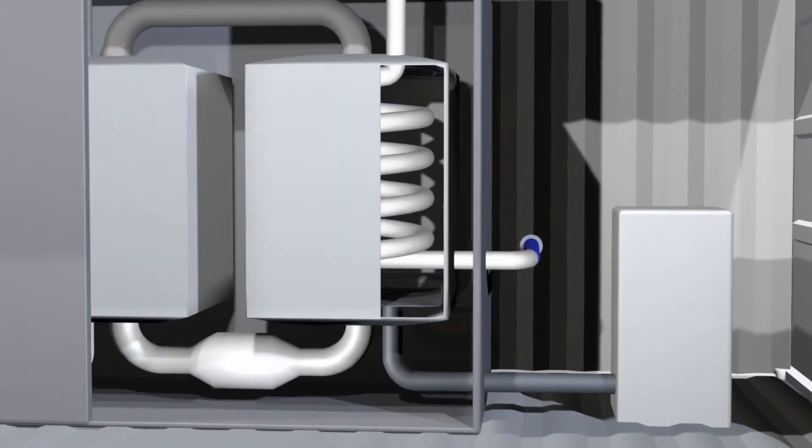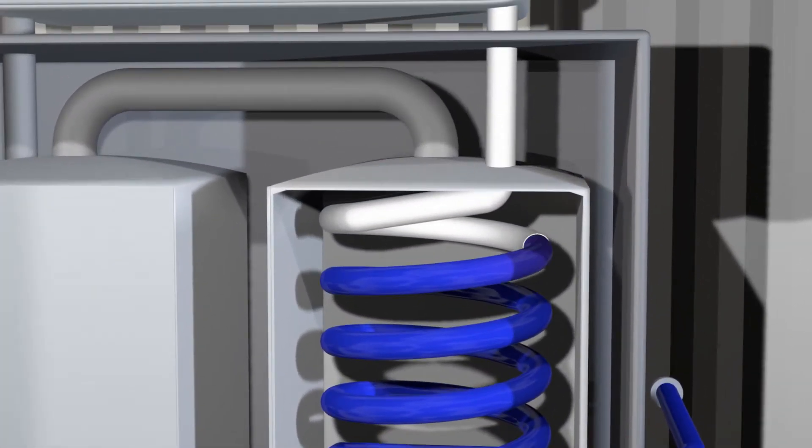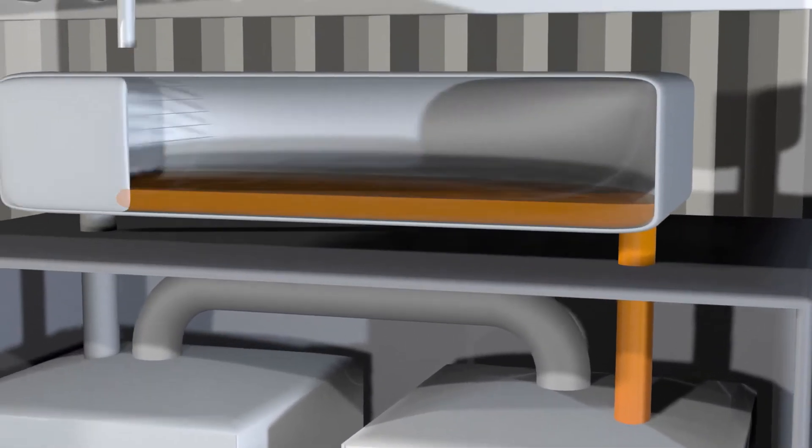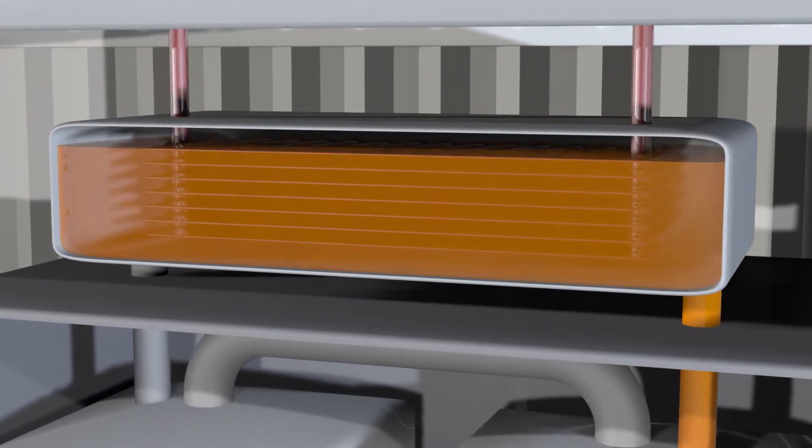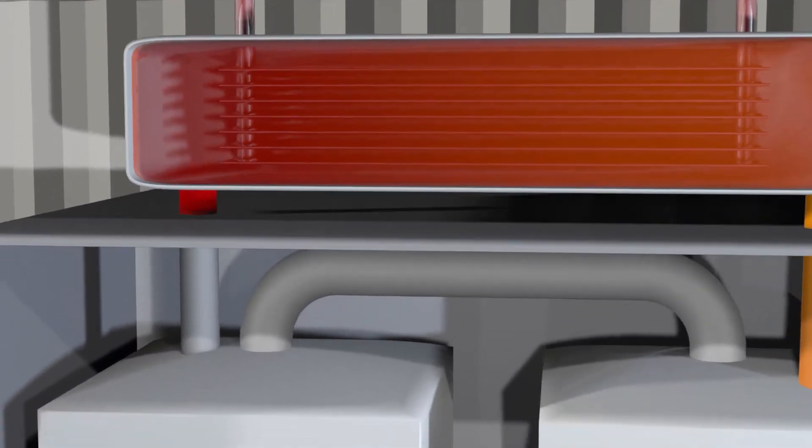Saline untreated water enters the condenser and is preheated there. In the external heat exchanger, the water is heated to a maximum of 95 degrees Celsius.